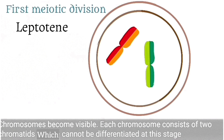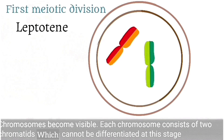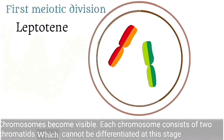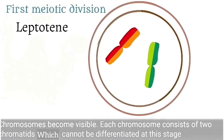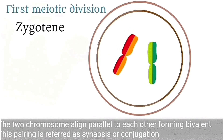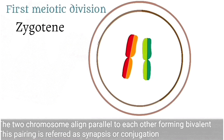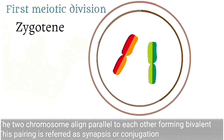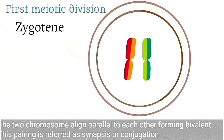Starting off with the first meiotic division, we look at the first stage of prophase: the leptotene stage. In the leptotene stage, chromosomes become visible; each chromosome consists of two chromatids which cannot be differentiated at this stage. Moving on to the zygotene phase, the two chromosomes lie parallel to each other forming a bivalent — this pairing is referred to as synapsis or conjugation.